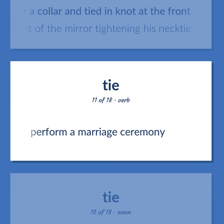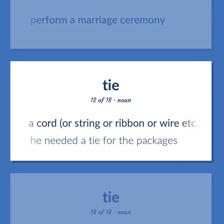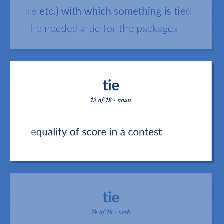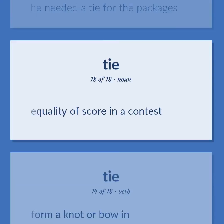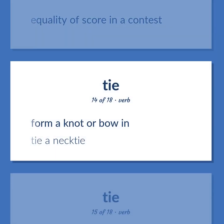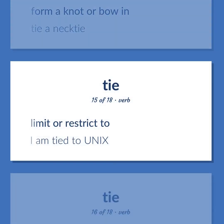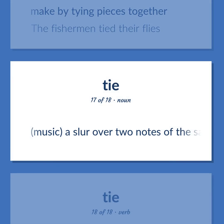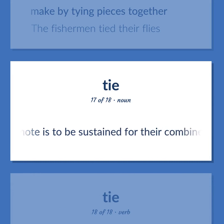Perform a marriage ceremony. A cord, or string, or ribbon, or wire, etc., with which something is tied. He needed a tie for the packages. Equality of score in a contest. Form a knot or bow in. Tie a necktie. Limit or restrict to. I am tied to commitments. Make by tying pieces together. The fishermen tied their flies. Music: a slur over two notes of the same pitch indicating that the note is to be sustained for their combined time value. Unite musical notes by a tie.